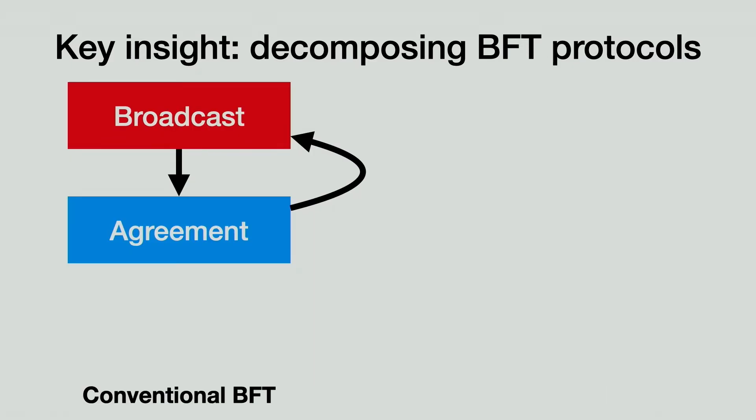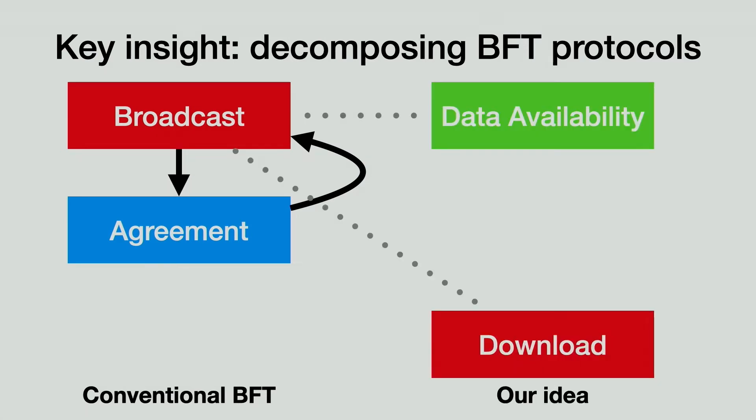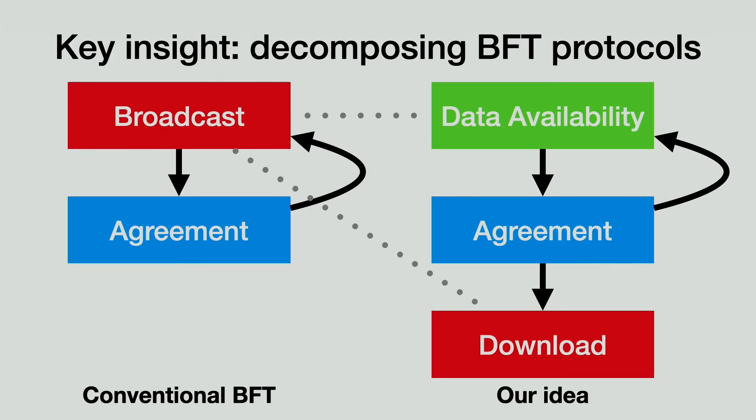Existing protocols run broadcast and agreement in lock steps. The broadcast phase couples data availability with block download, but such coupling is not necessary and forces nodes to download blocks in a critical path, which hurts the system throughput when facing bandwidth variability. Our key idea is to decouple the broadcast phase into data availability and block download. The former is critical for consensus, so it runs in lock steps with the agreement. The latter is not required for consensus, so we can move it out of the critical path.